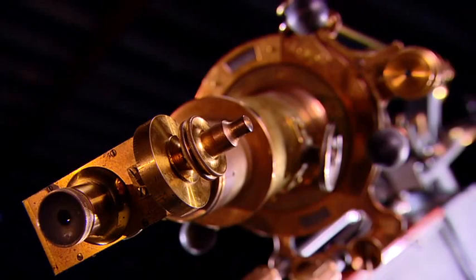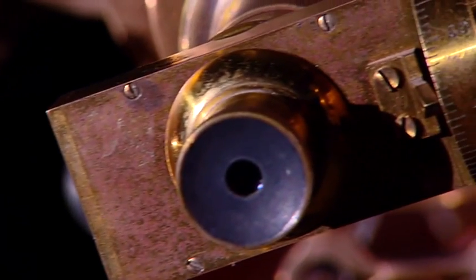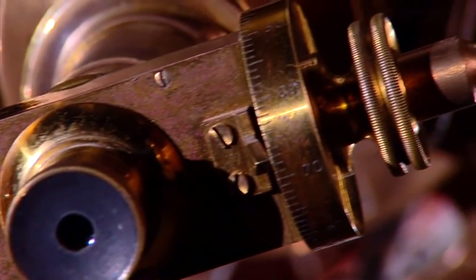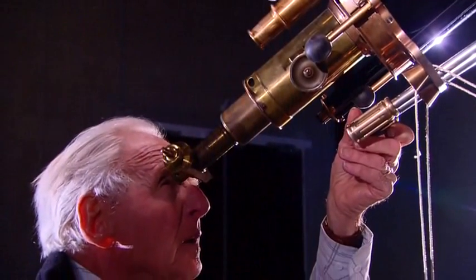Now that the telescope was ready, MacDonald could observe the double star. For this observation, he required a measuring micrometer. Two measurements have to be made.